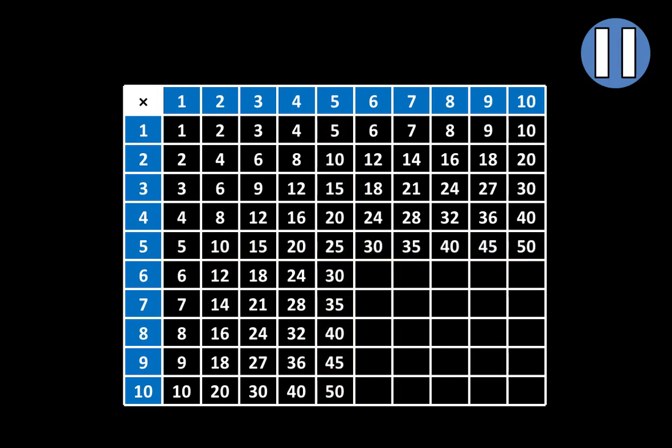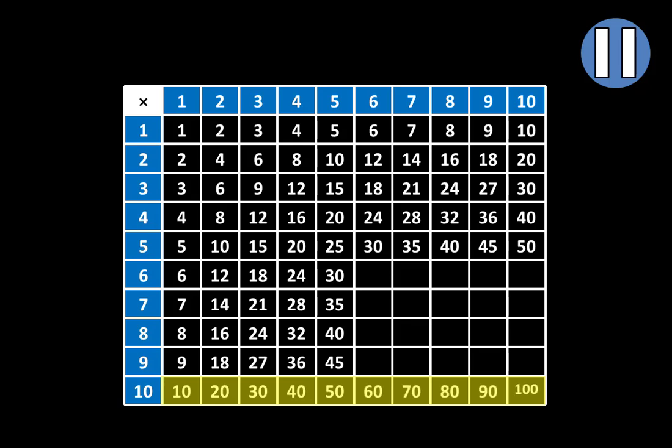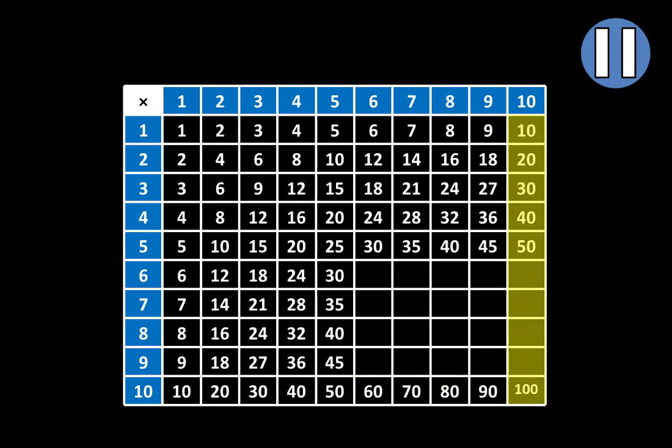Now instead of moving to the multiples of 6, we're going to move to the multiples of 10. You can see that this already says 10, 20, 30, 40, 50. So we'll complete the multiples of 10: 60, 70, 80, 90, and 100. Those are all the multiples of 10 that will be on the table. Let's also complete the multiples of 10 in this column. We see 10, 20, 30, 40, and 50. So let's fill in 60, 70, 80, and 90.